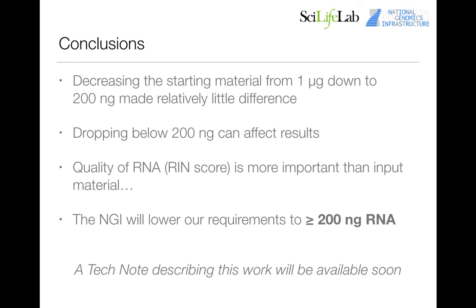Just to clarify, this was done using TruSeq poly-A stranded, which is why the RIN values have the effect they do. If we'd used ribo-depletion we would have seen less of a drop-off as a result of the RIN scores. That said, the Life Technologies RNA was essentially perfect quality with a RIN score of 10, so the effects we saw at 50 nanograms were present within that sample as well.